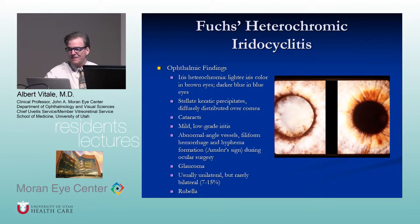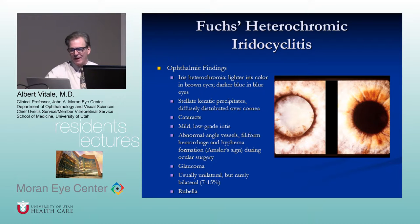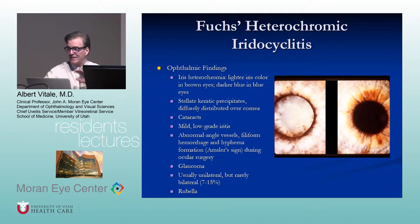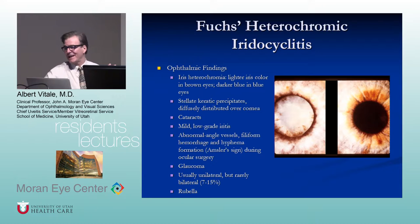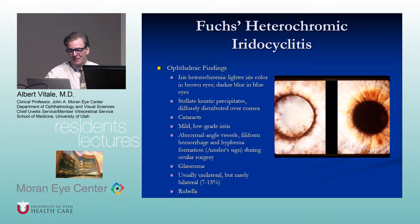Fuchs is also called Fuchs uveitis syndrome. The findings include iris heterochromia — the lighter iris color in a brown eye, or darker iris in blue eyes because the anterior pigment layer is lost. They describe so-called stellate KP that look like little stars, distributed throughout the cornea.